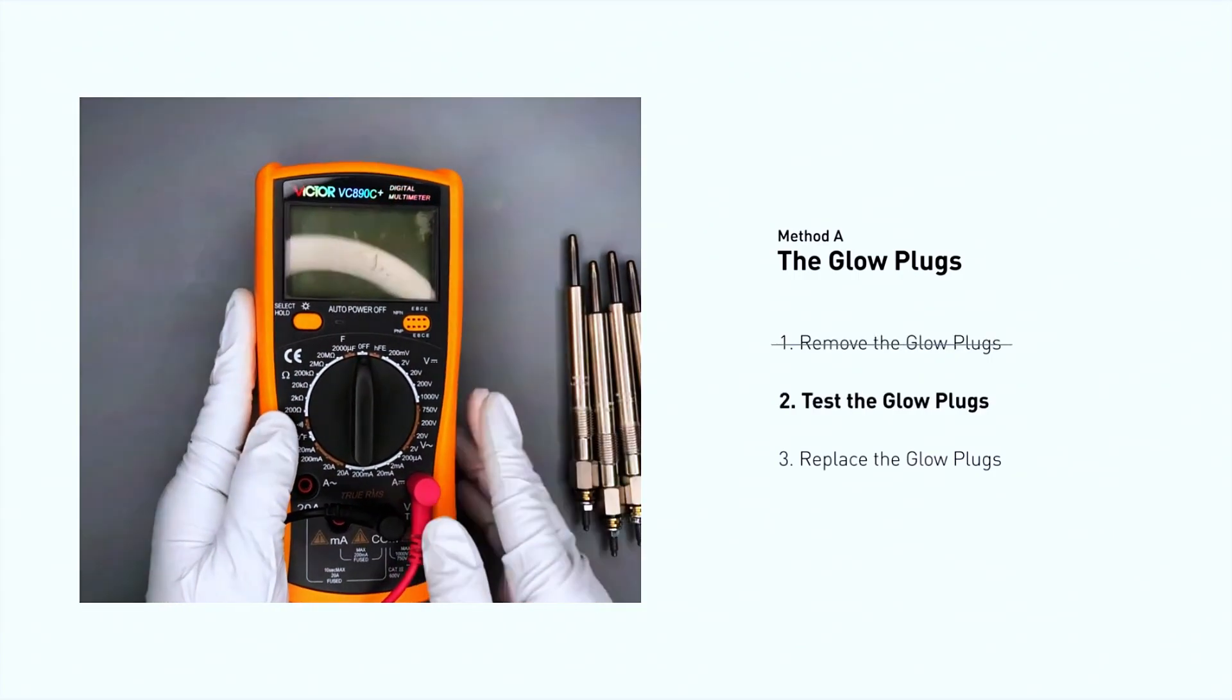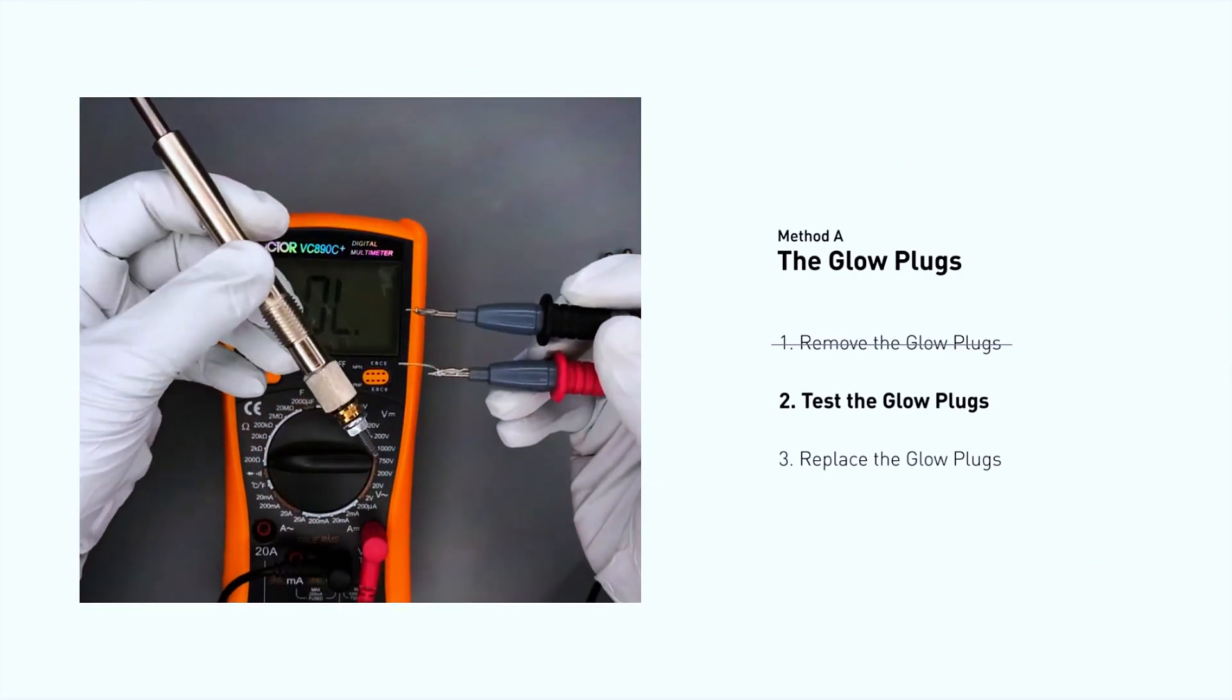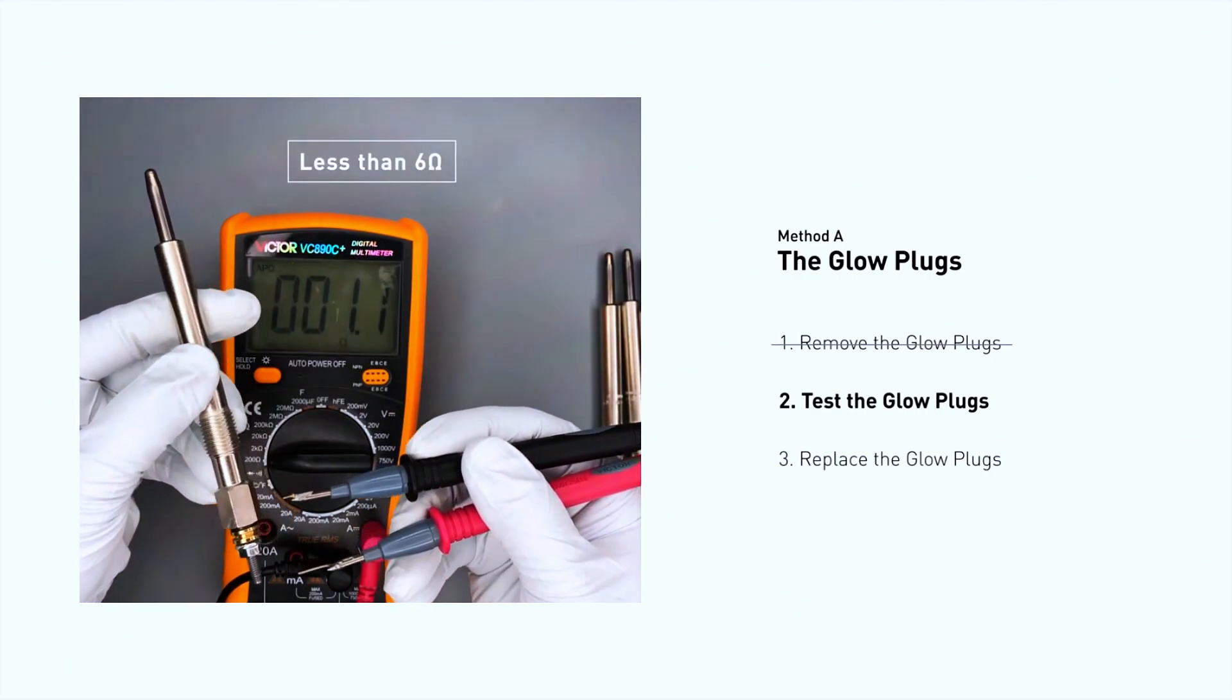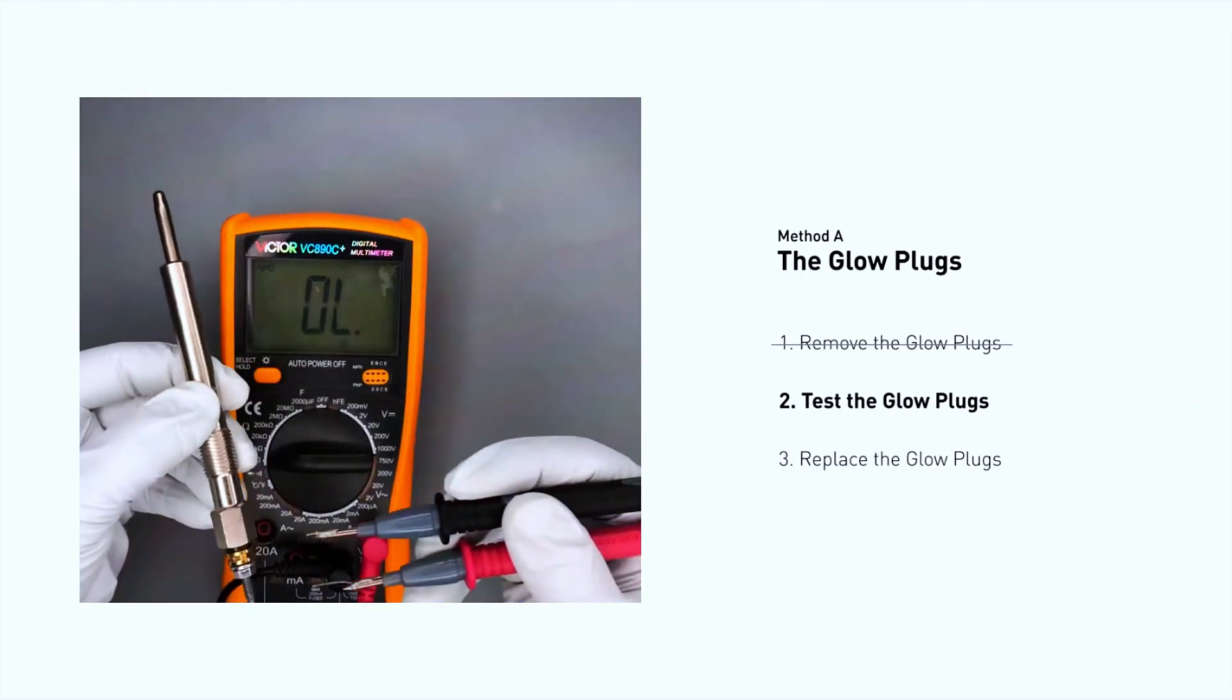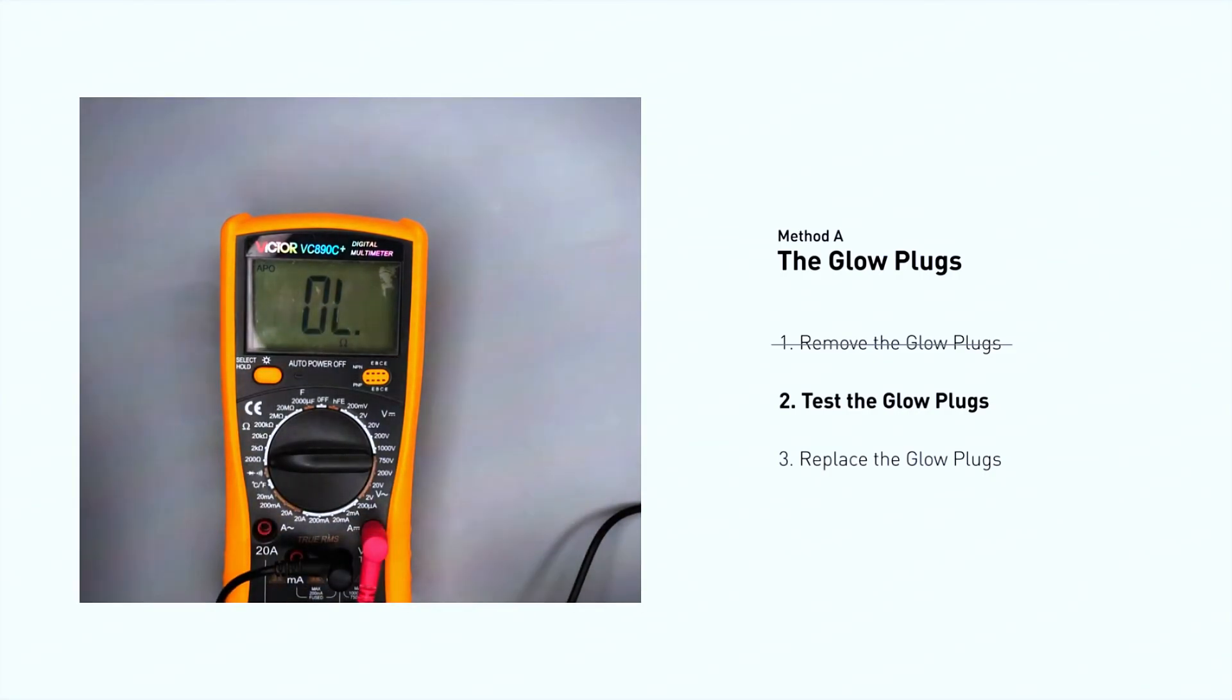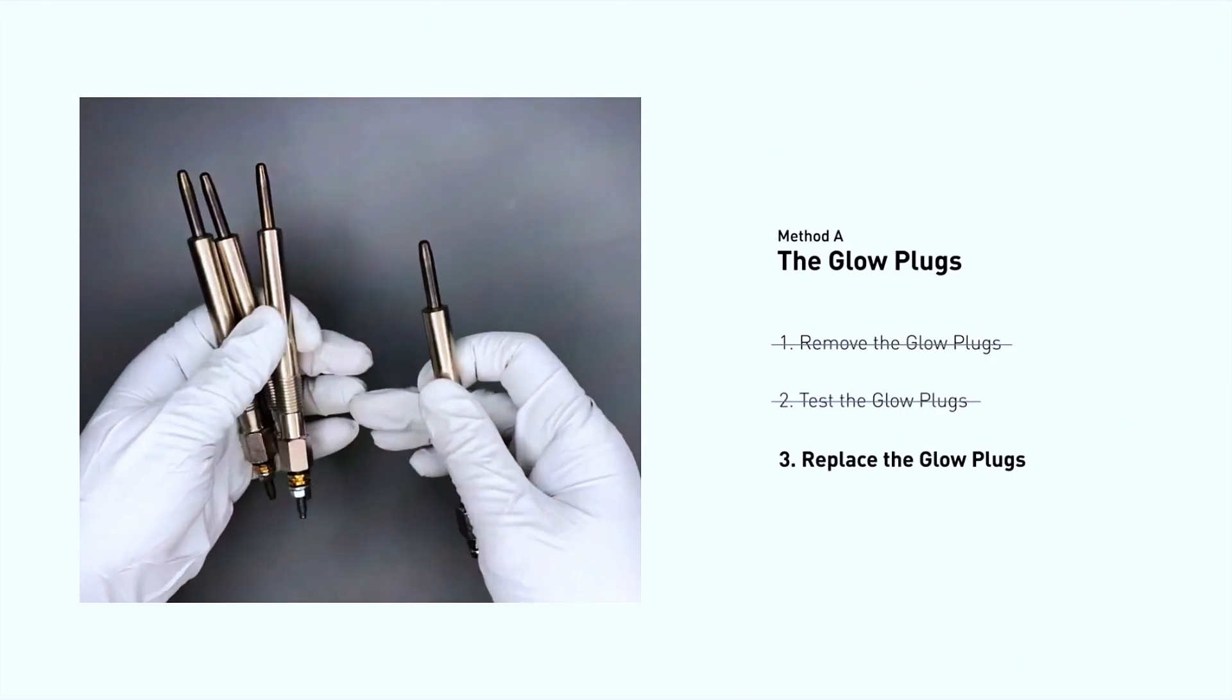Use a multimeter to test the glow plugs. Read the result on the multimeter display. Note that a resistance of less than six ohms usually means the glow plug is good. Repeat the procedure for the remaining glow plugs until they have all been tested. If any of the glow plugs fail the test, it is recommended that the entire set be replaced.